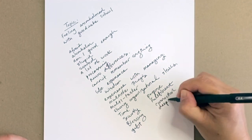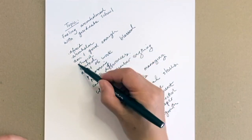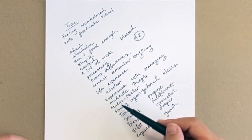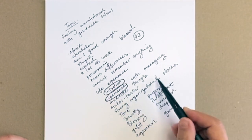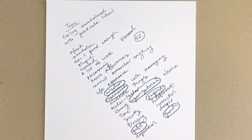What you've just seen me do is two-minute stream of consciousness writing based on a topic that I will be working through. Now I'm circling keywords that have come to my conscious awareness.